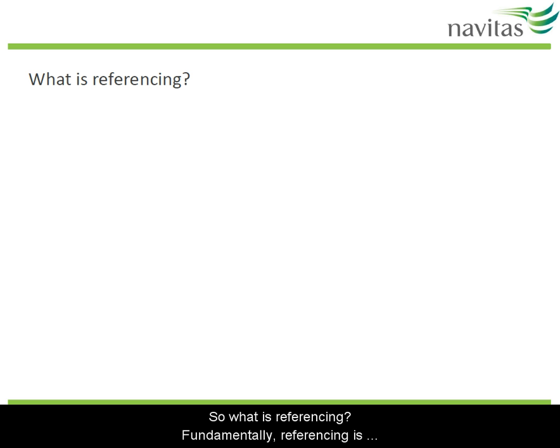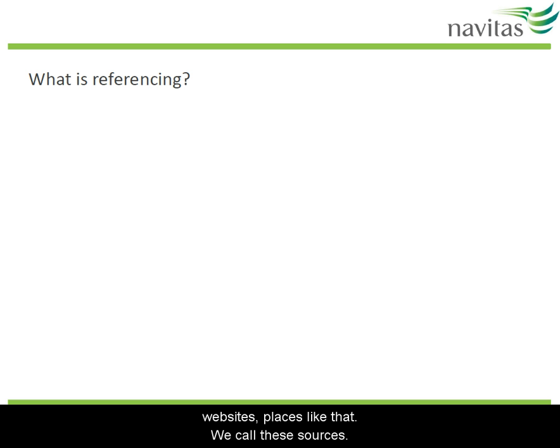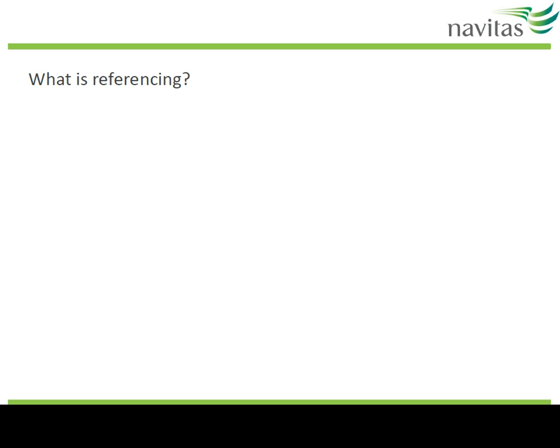So what is referencing? Fundamentally, referencing is saying where you got your information from. You've learnt the information you're going to use in your assignments from books, articles, websites, places like that. We call these sources. Referencing is saying which sources the information comes from. This is also called acknowledging your sources.